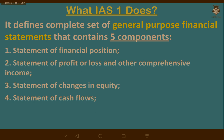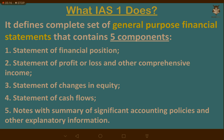Cash flows from investing activities covers acquisitions or sales of plant and machinery. The third part is cash flows from financing activities, which tells you how the company raised its finances. For example, if a company faced a cash shortage and the operating cash flow was negative, the company might issue more shares or acquire a loan — these financing sources go into cash flows from financing activities.